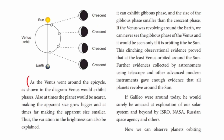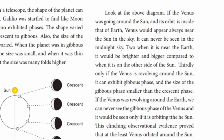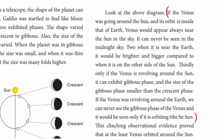As Venus went around the epicycle, its apparent size became smaller. Venus orbits the Sun, which explains its phases and changing apparent size as observed from Earth.